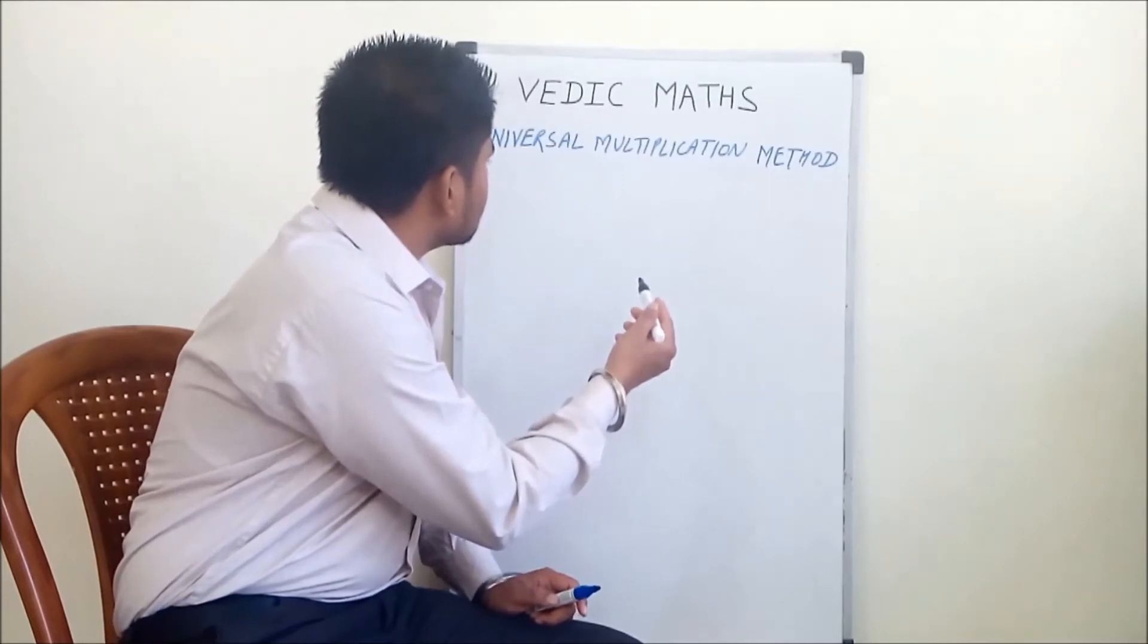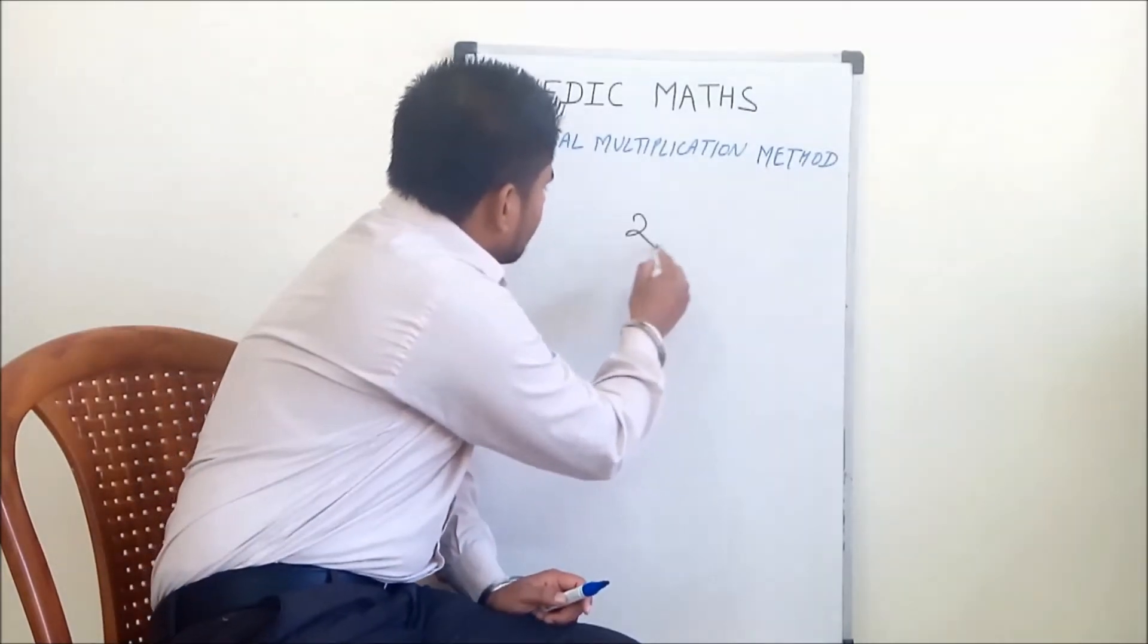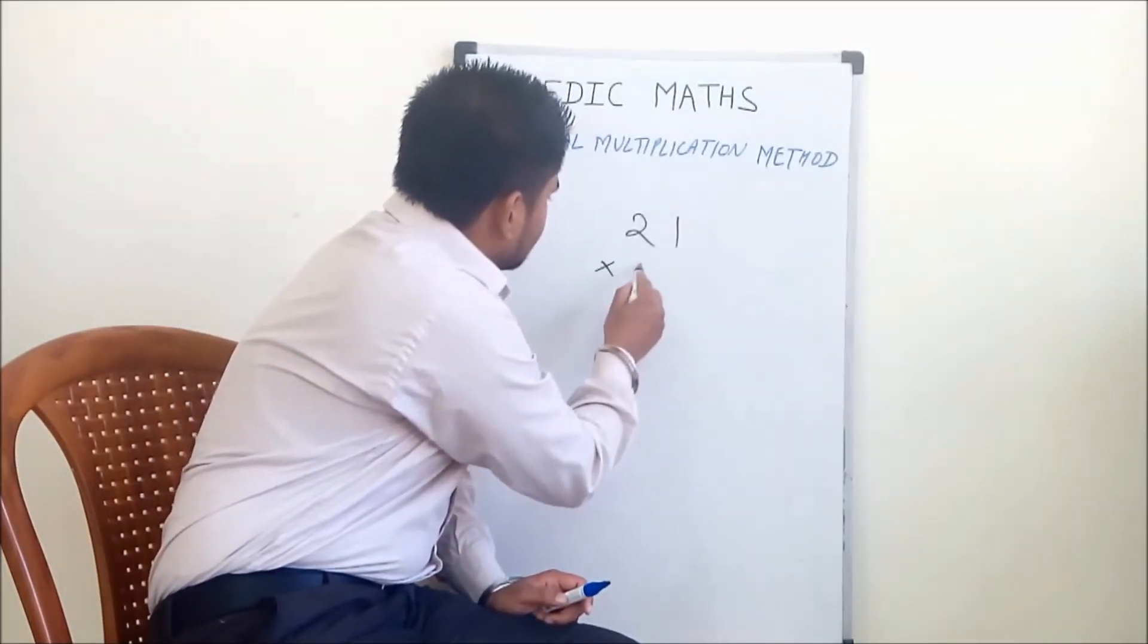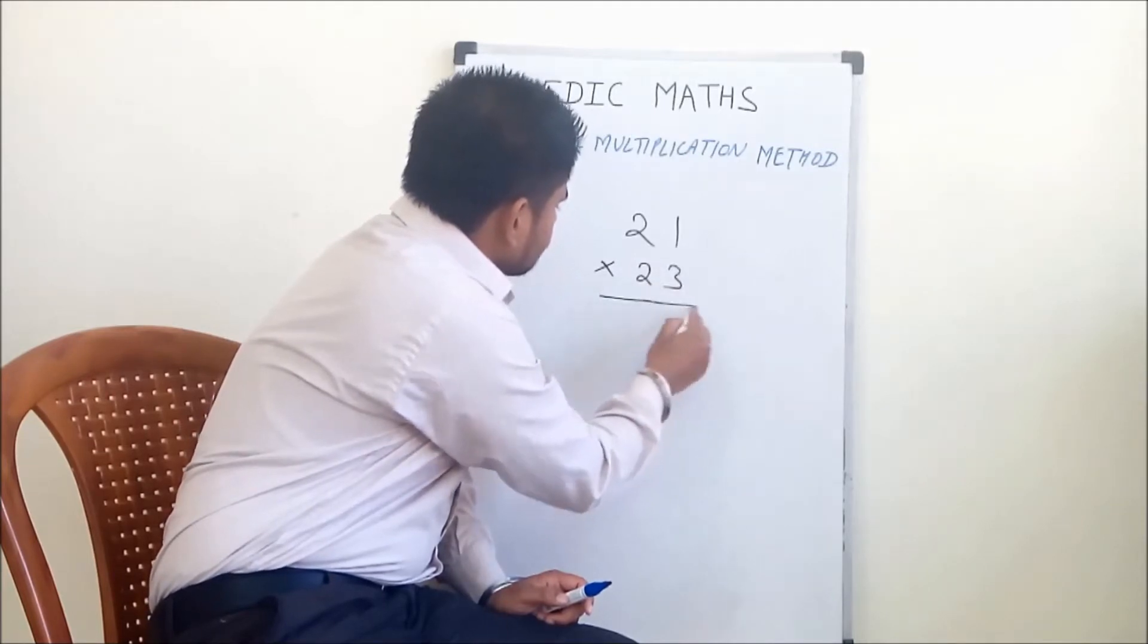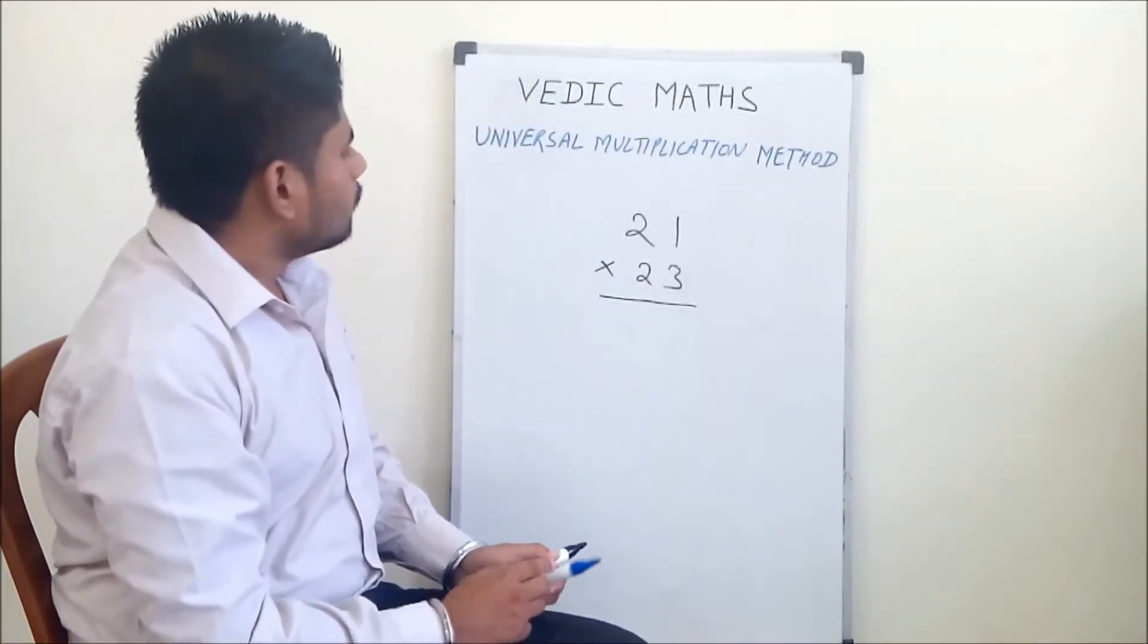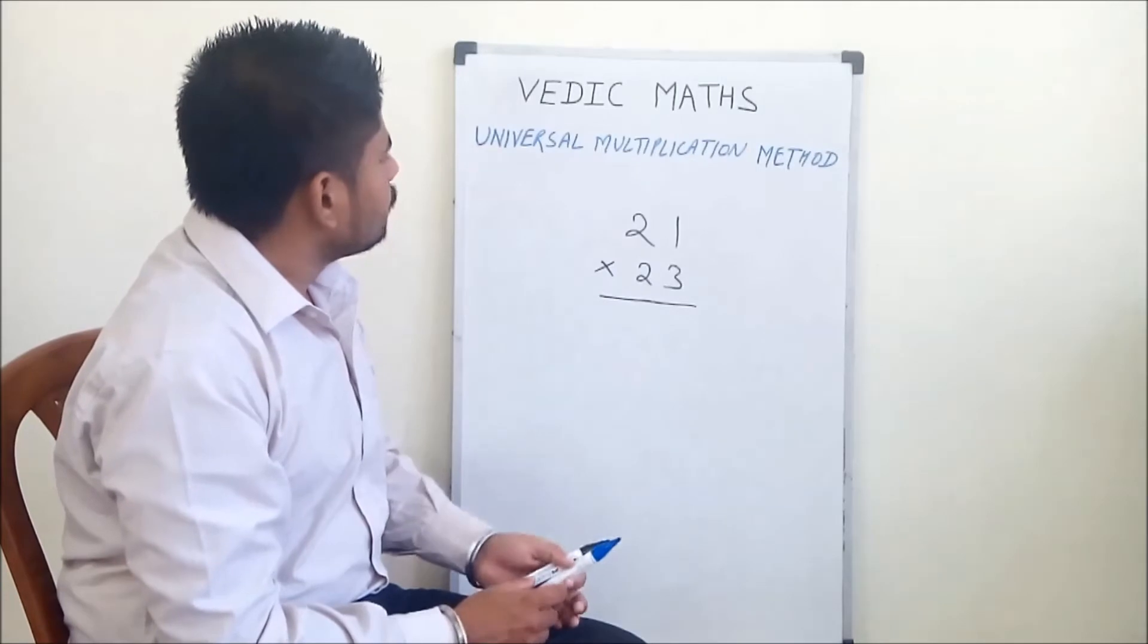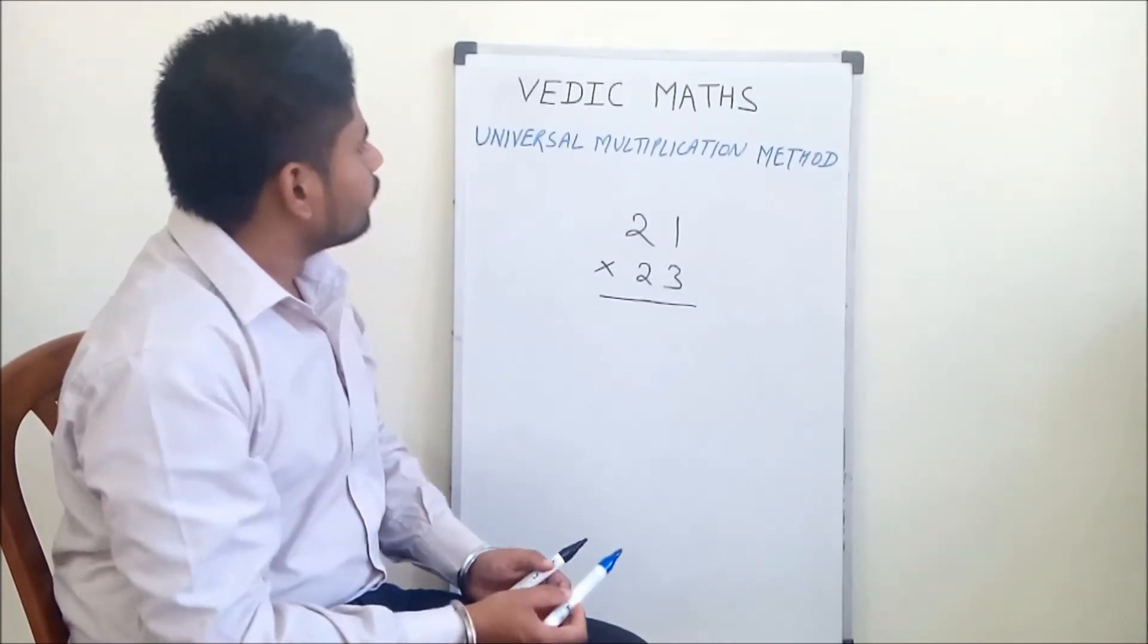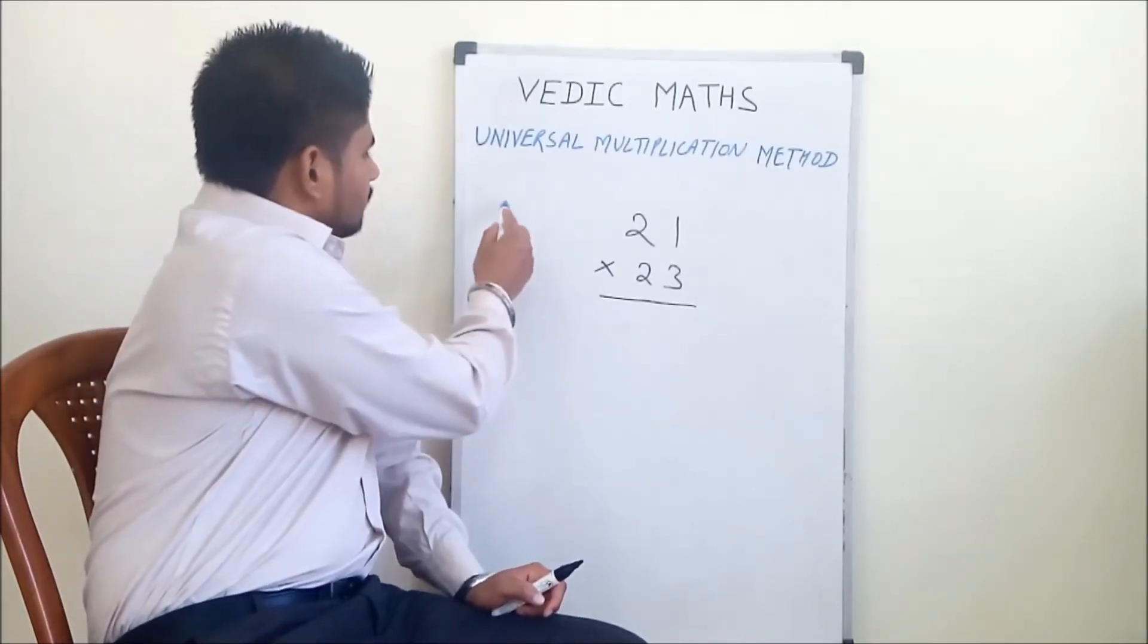For example, suppose we multiply 21 into 23. To multiply this number using the universal multiplication method, we have to understand the simple pattern first.